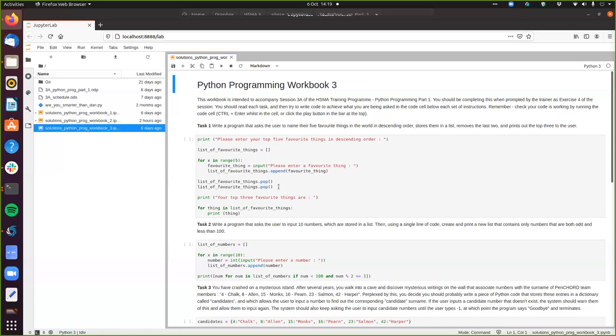So for the second task, I ask you to input 10 numbers, get the user to input 10 numbers which is stored in a list, and then using a single line of code to create and print a new list that contains only numbers that are both odd and less than 100. So this is to get you to use list comprehension. So first of all, I set up a new list called list of numbers. It starts off empty. Then I use a for loop again to go around 10 times and ask the user to input a number in exactly the same way I did for task one. And for each number, I then append that to my list of numbers. Then we've got a list of 10 numbers by the time we've gone through this for loop.